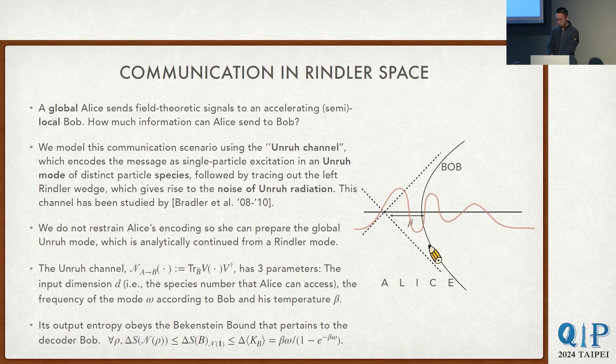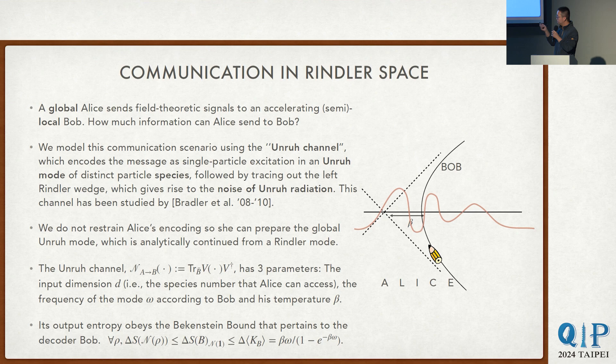Question: Have you thought about using other spaces than flat space? Answer: One of the reasons we use flat space is that the Casini modular Hamiltonian invoked here does not always have a nice local integral expression. For other spaces or arbitrary regions, it may not be a local integral. So I'm using a situation where it's relatively unambiguous what the bound means.